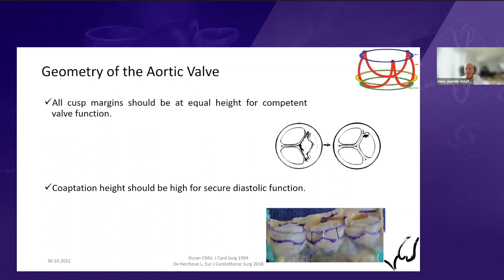At that time — the common denominator of these pioneering series — the main goal was that all cusp margins should be at equal height for competent valve function, and coaptation height should be high enough for secure diastolic function. This is also how I started when I embarked on aortic valve repair. One of my first operations was a David operation after I saw Tyrone perform these operations 30 years ago.